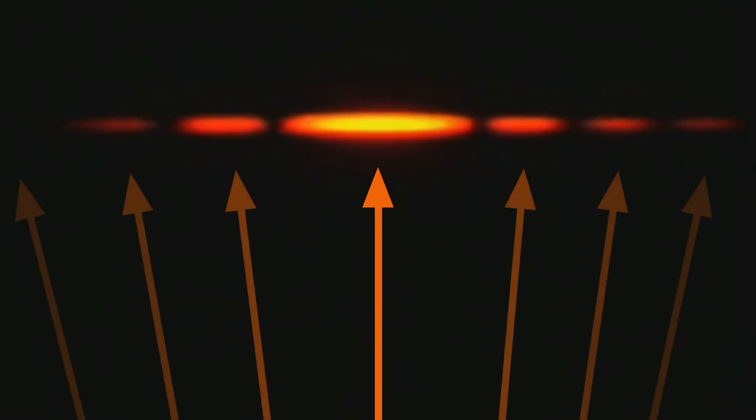Behind the slit, light does not only hit the screen following a straight path, but takes all kinds of directions, with fluctuating degrees of intensity, so that we see the stripes at various points on the screen.